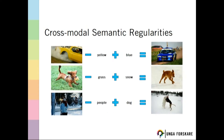Now I want to show you something very interesting: cross-modal semantic regularities. In the first row, we have an image of a yellow car. We take the vector for this yellow car, subtract the word yellow and add blue, and we find the vector is very similar to the image of a blue car. Similarly, we have a dog in grass — replace grass with snow — and we get the image of a dog in the snow. Also, a person in the snow with people replaced by dog gives us a dog in the snow.